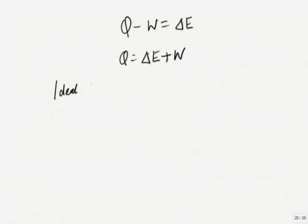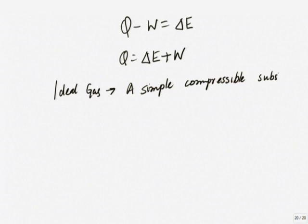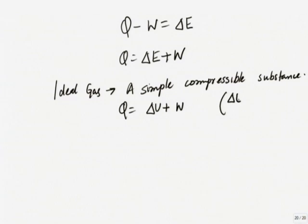Now I will take the first and simplest case: ideal gas. An ideal gas is a simple compressible substance. Let me assume there is no gravitational potential and no movement, just to make my life easy. I will write Q equals delta U plus W, where delta E equals delta U using that assumption. No movement, no change in height — you are not bothered about all of this.